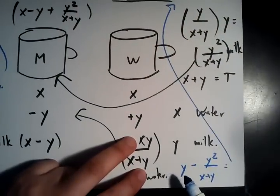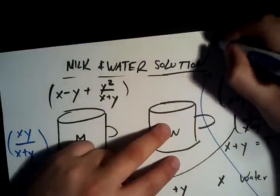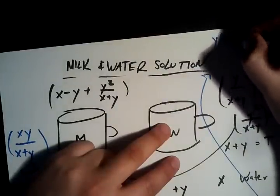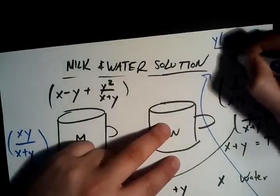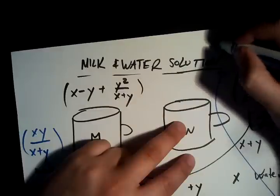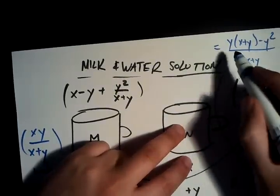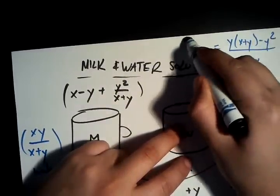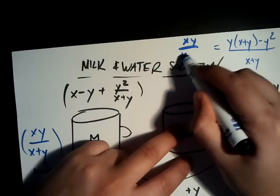We're going to do common denominator on the y. So it's going to be y times x plus y minus y squared over x plus y. And simplifying that, that comes out to xy plus y squared minus y squared. So it's just xy over x plus y.